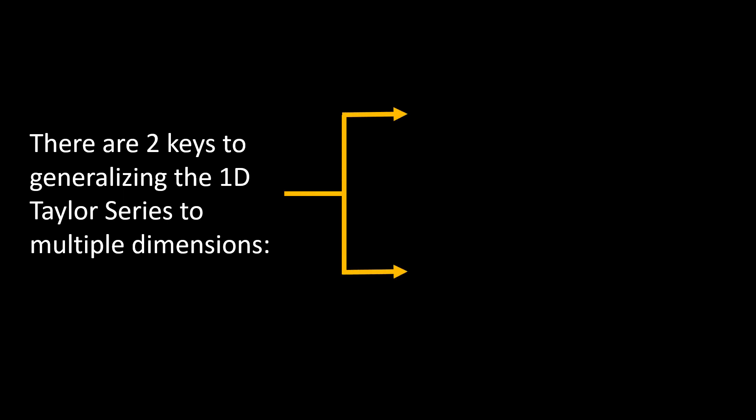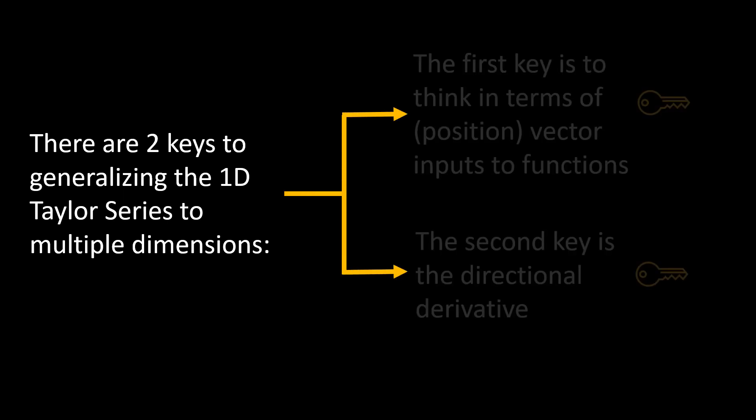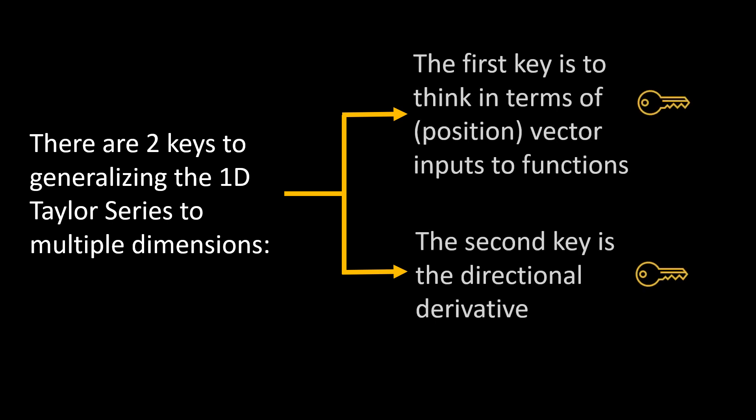There are two keys to generalizing the 1D Taylor series to multiple dimensions. The first key is to think in terms of position vector inputs to functions. The second key is the directional derivative, and I'll explain that more.